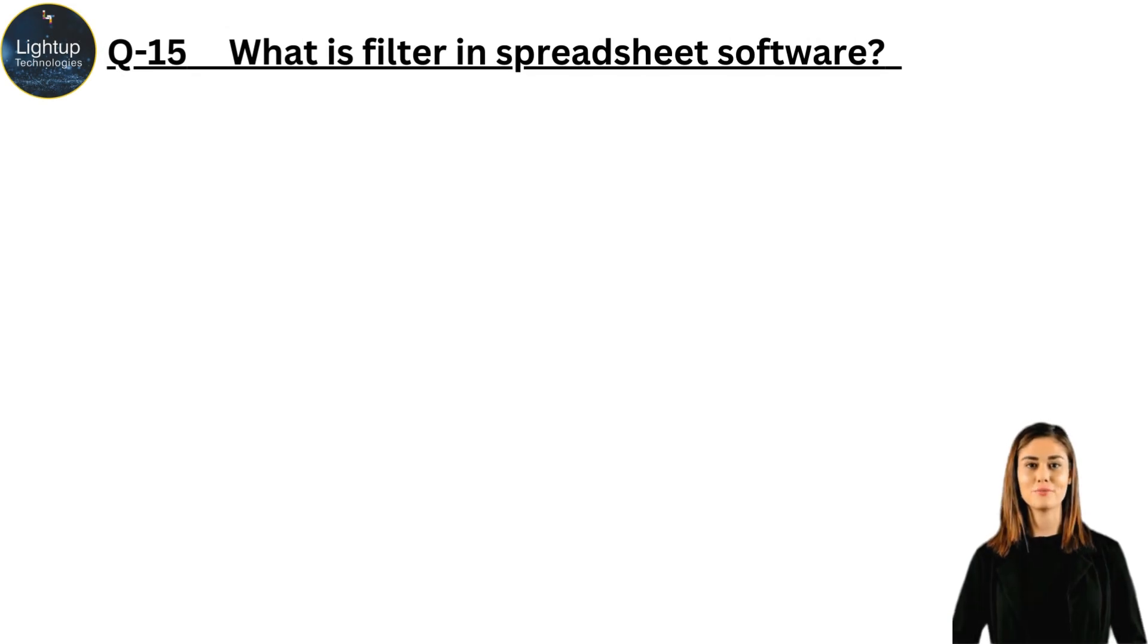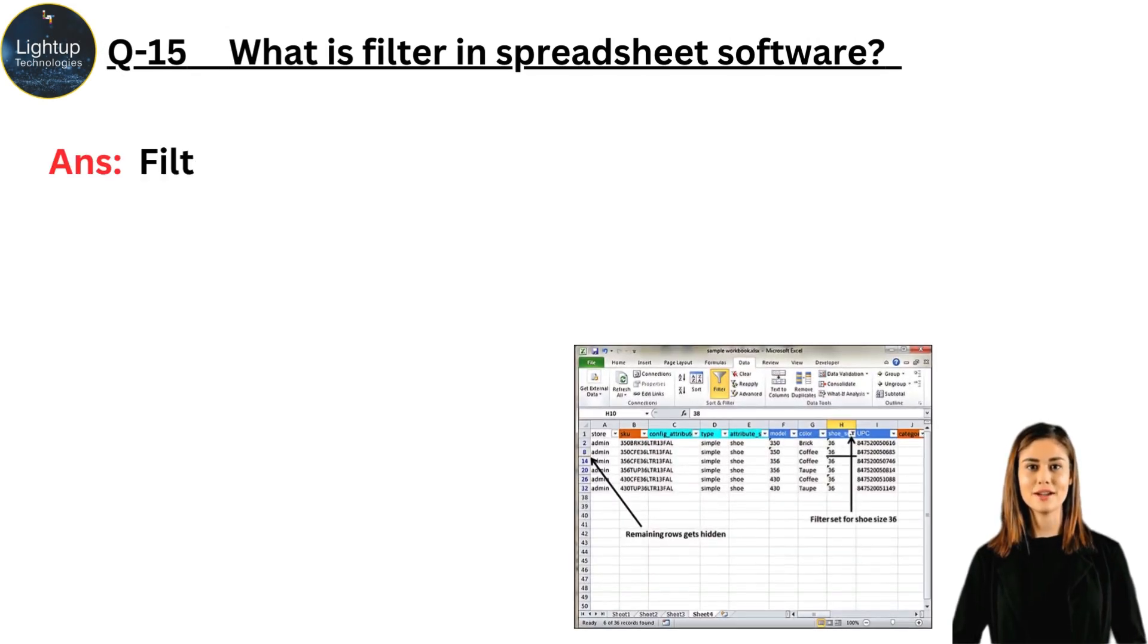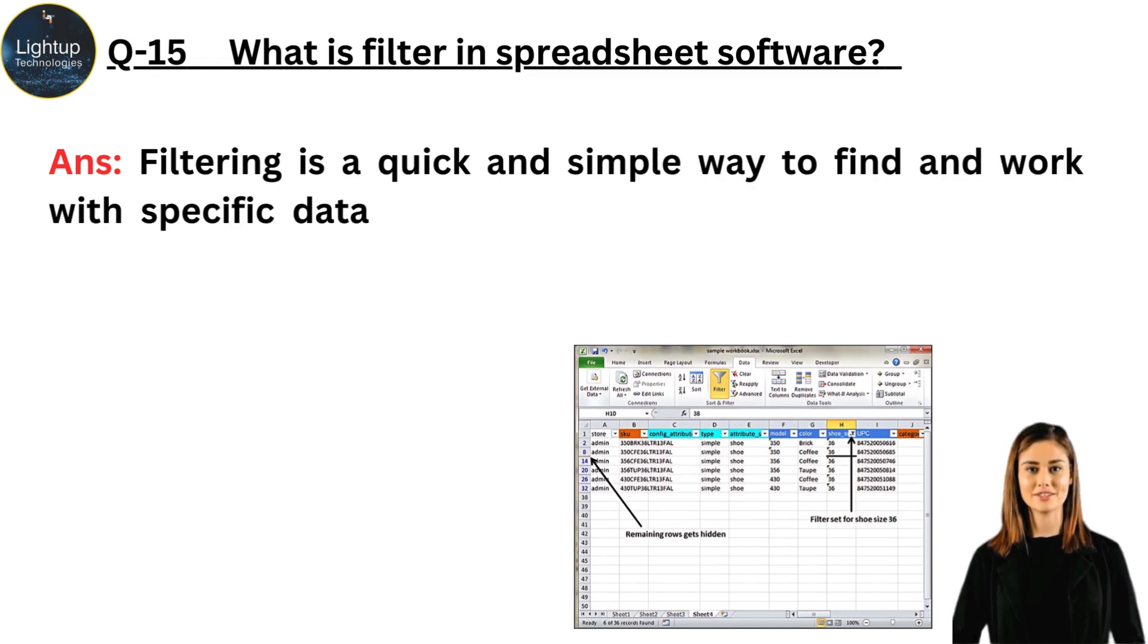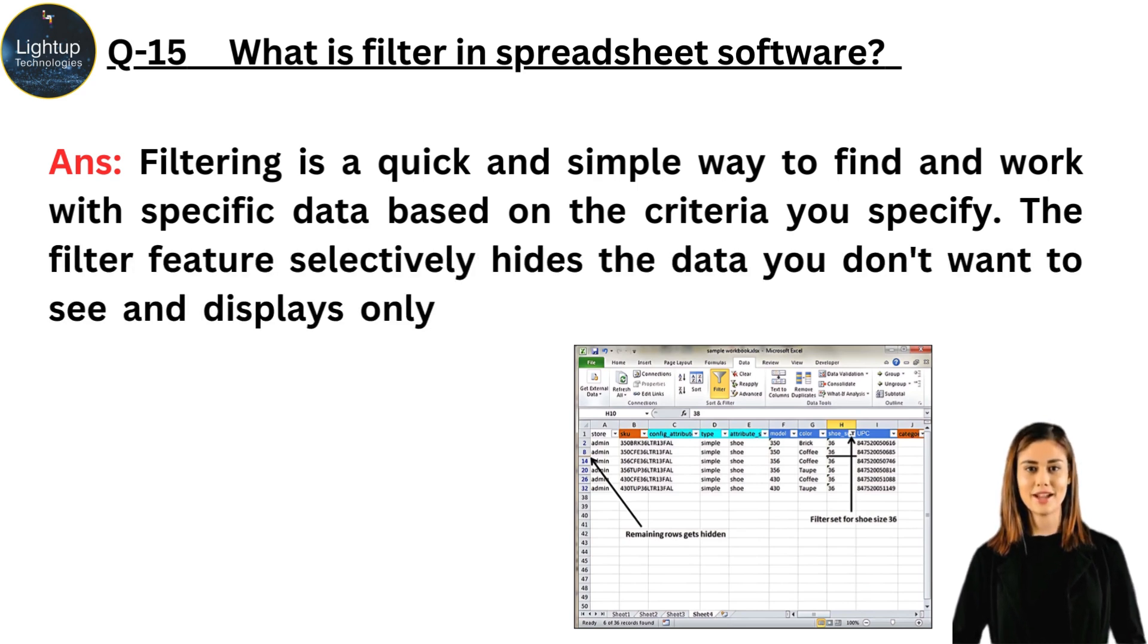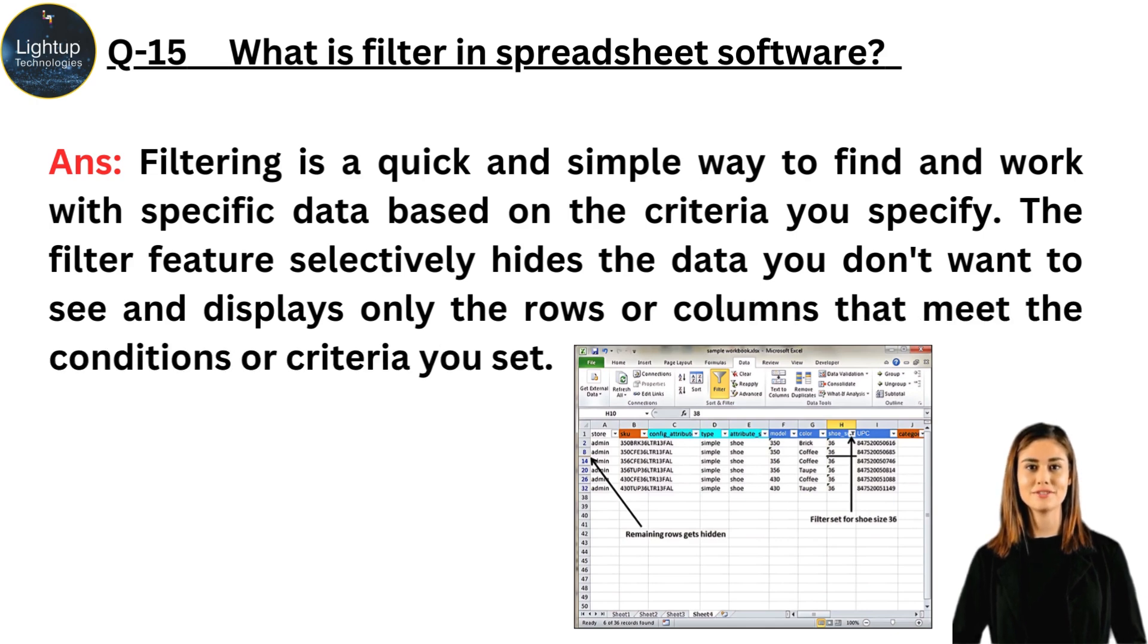What is filter in spreadsheet software? Filtering is a quick and simple way to find and work with specific data based on the criteria you specify. The filter feature selectively hides the data you don't want to see and displays only the rows or columns that meet the conditions or criteria you set.